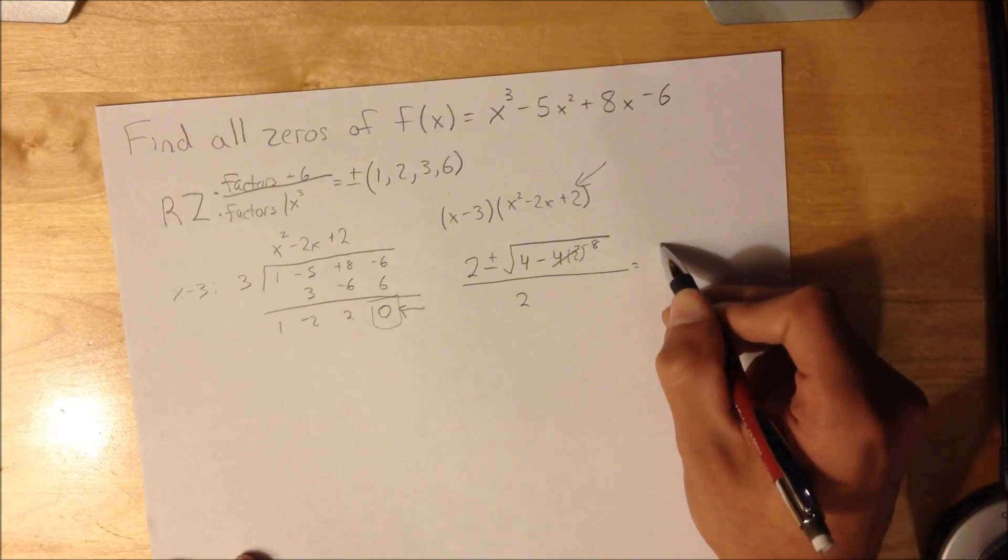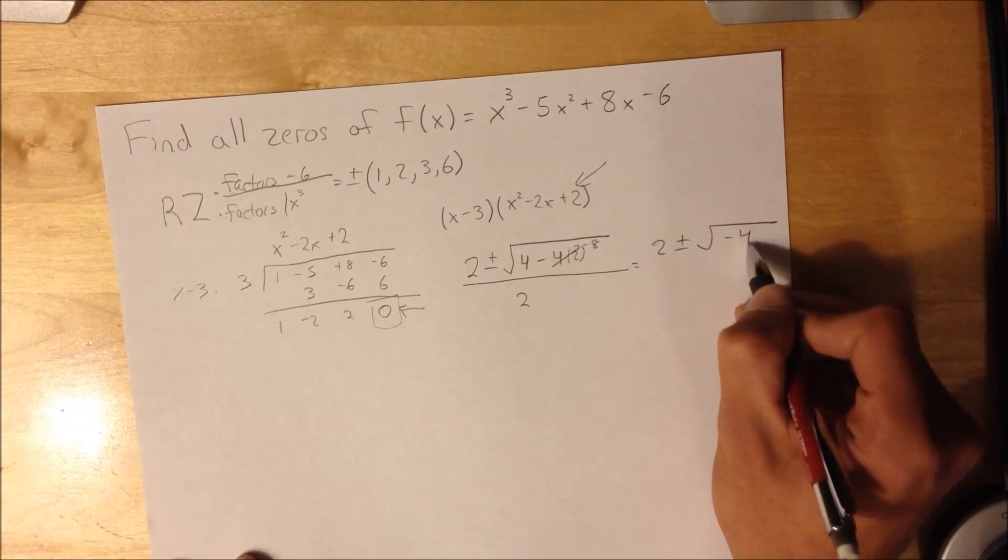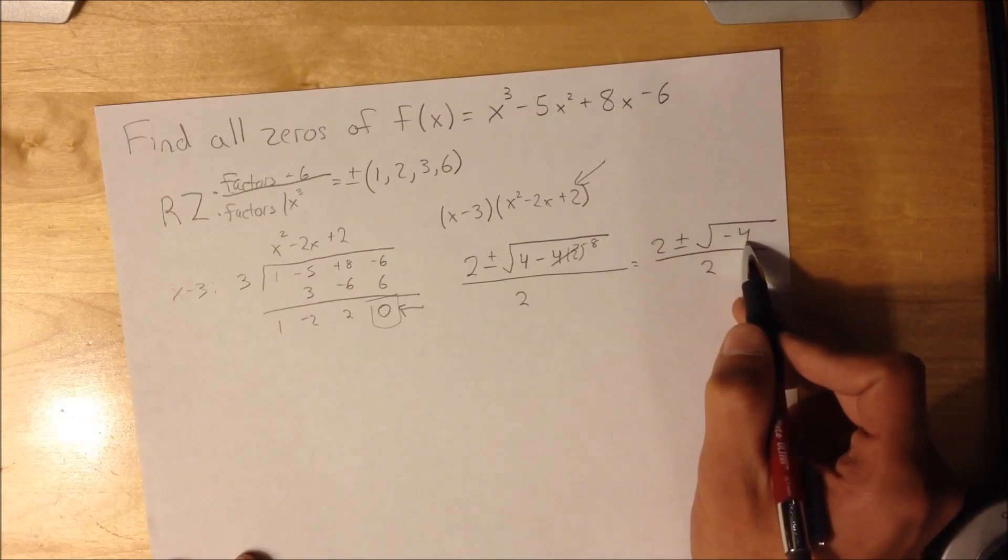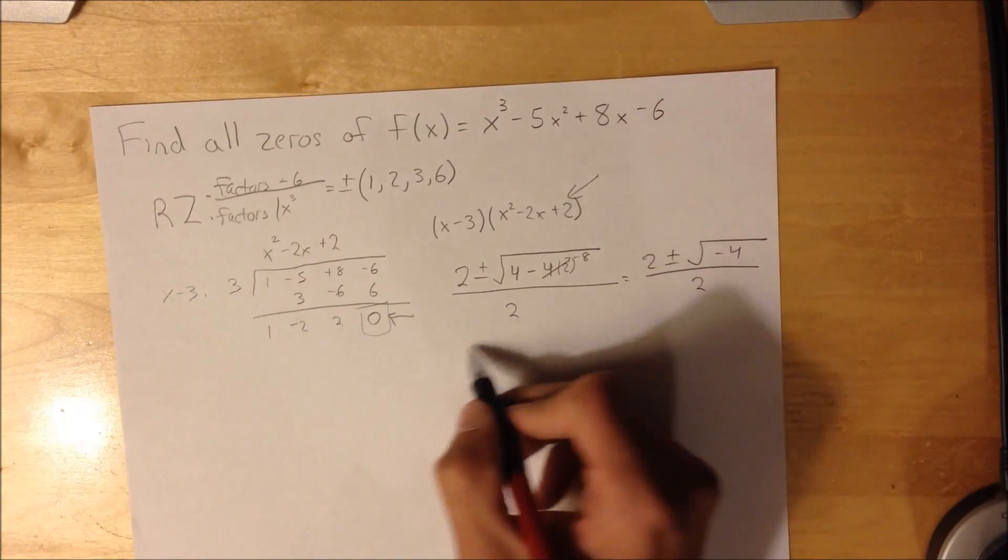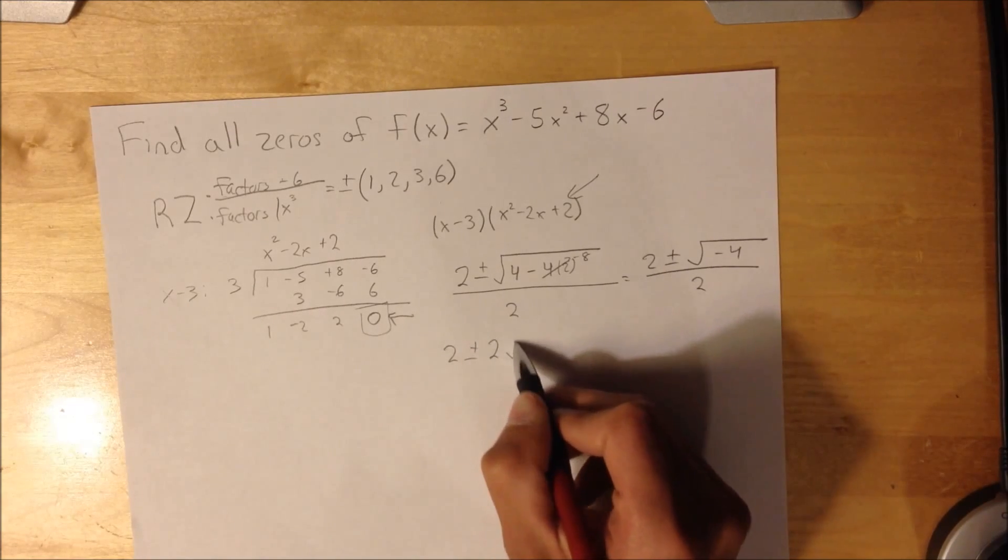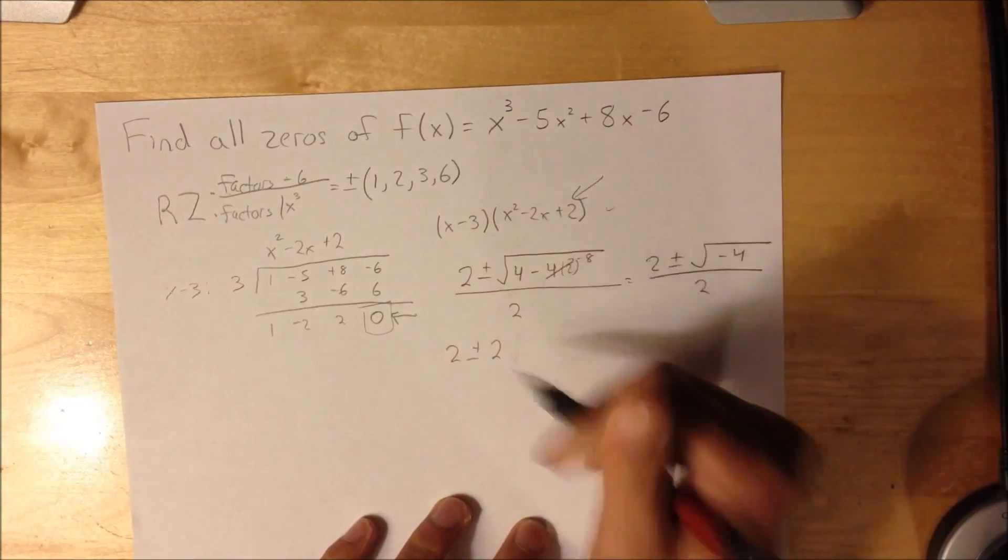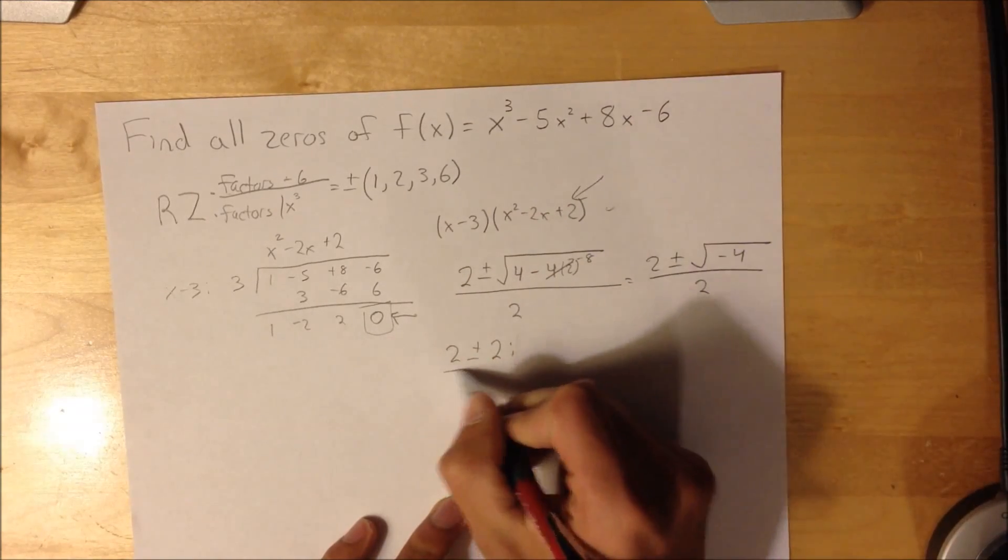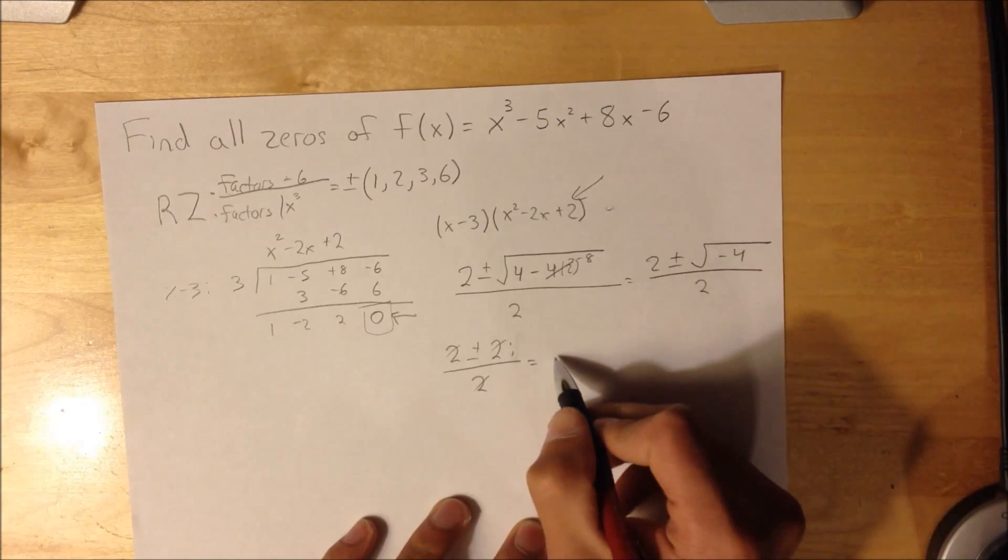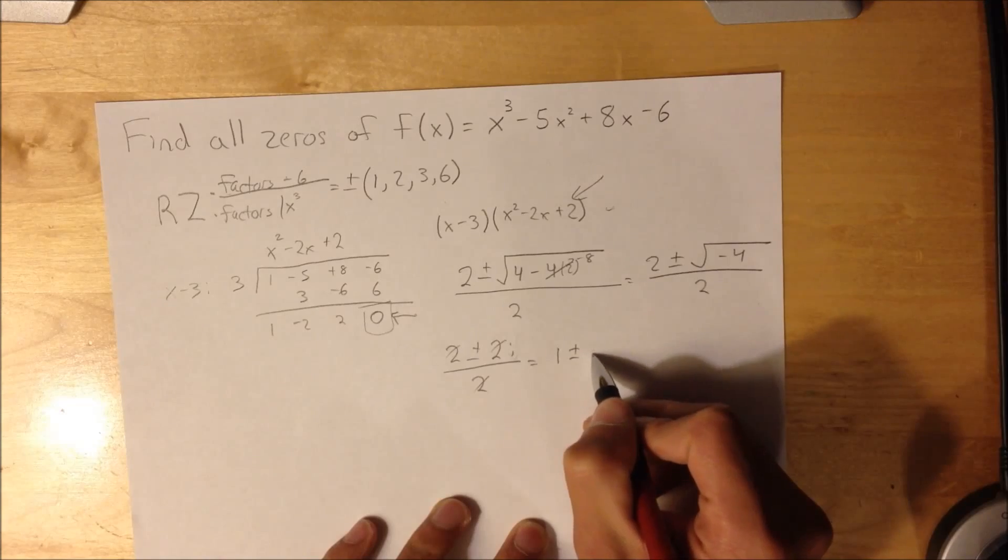This is going to simplify to 2 plus or minus the square root of -4 over 2. This term right here, the square root of -4, is going to simplify to 2i. And it's over 2. And then these all cancel out, the 2's. So you're just left with 1 plus or minus i.